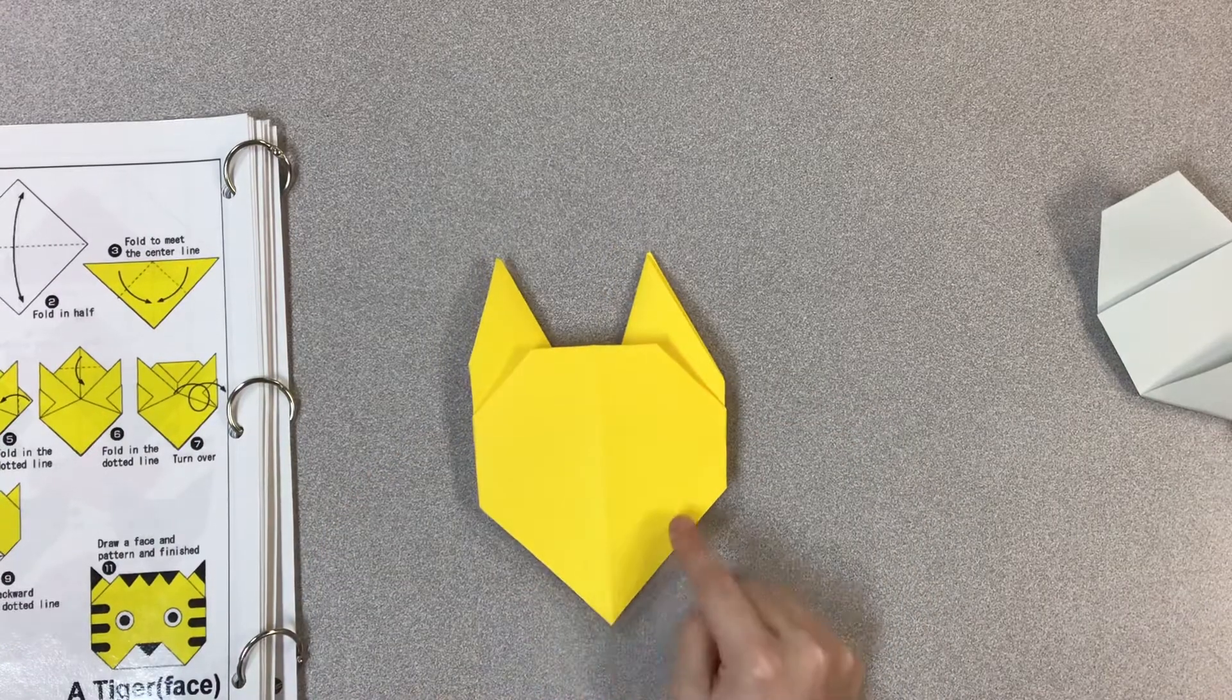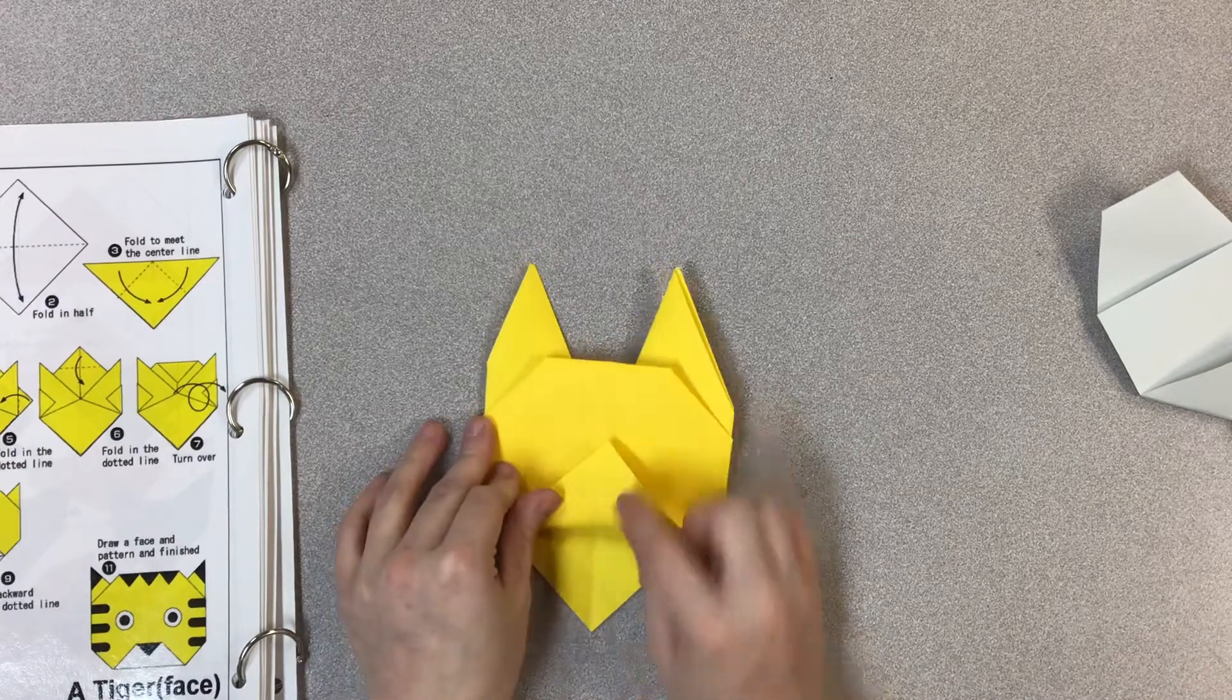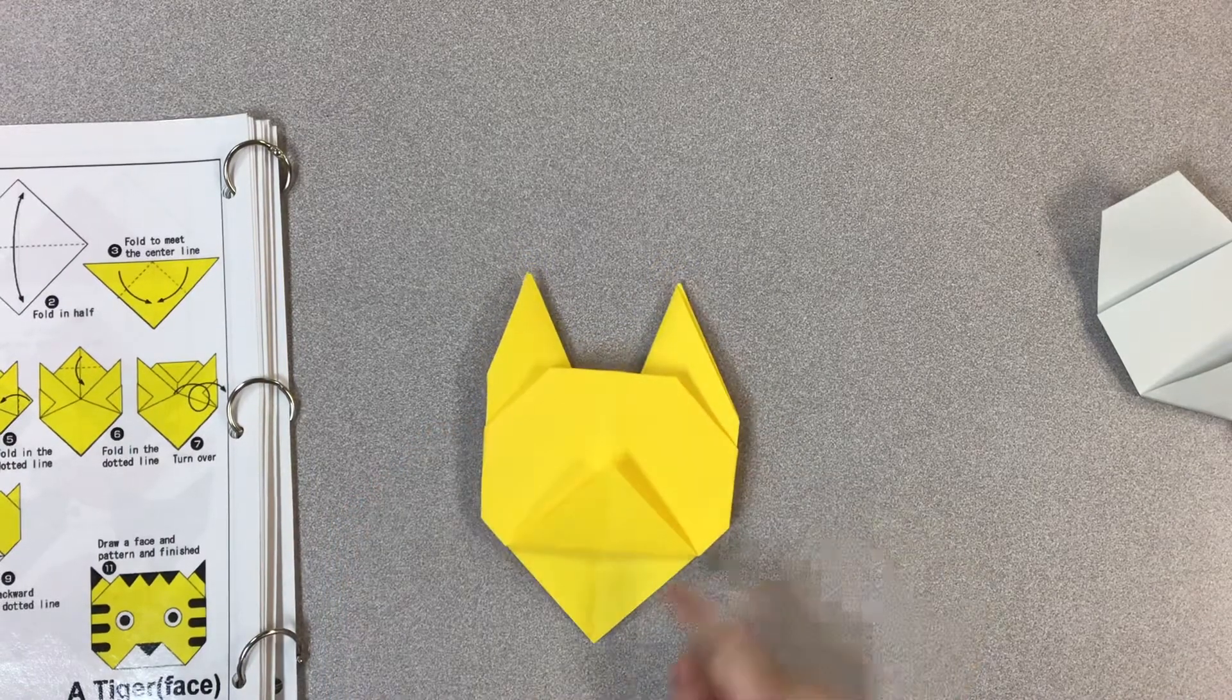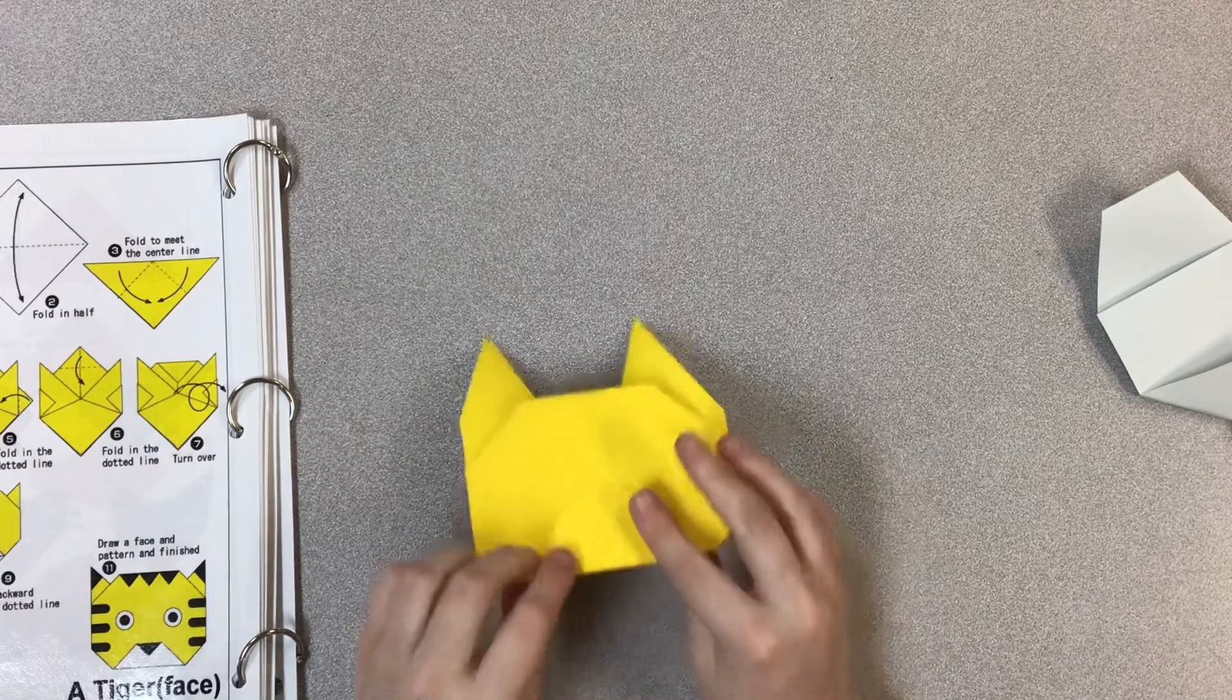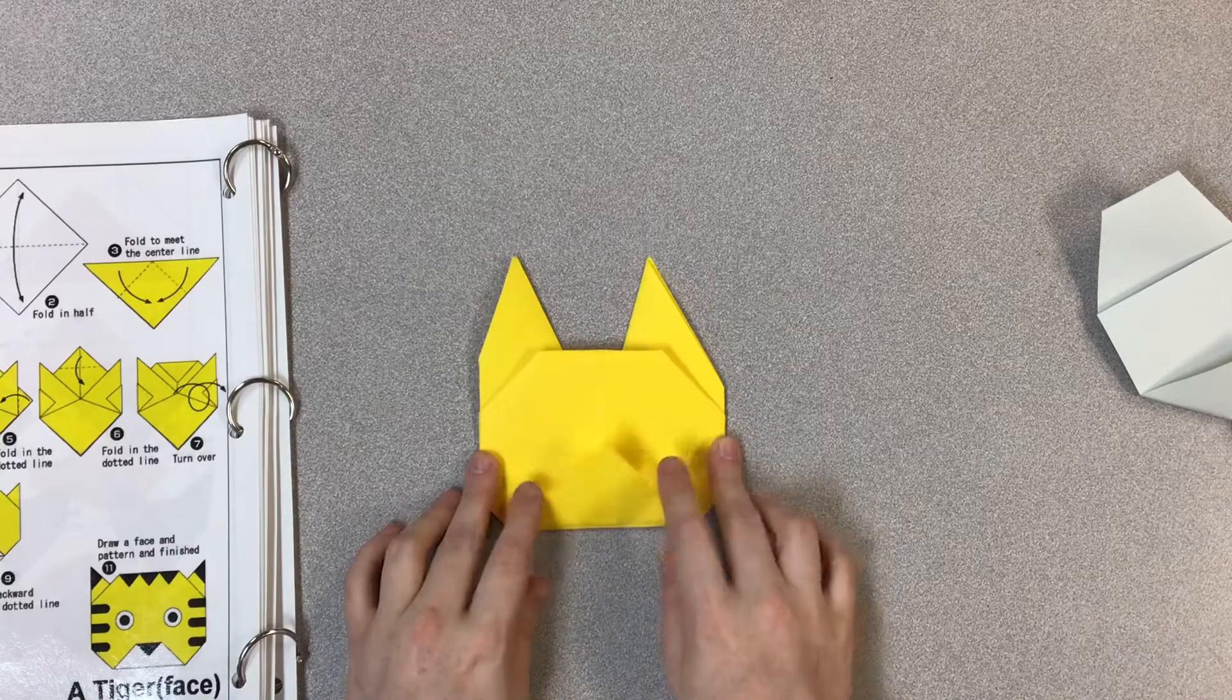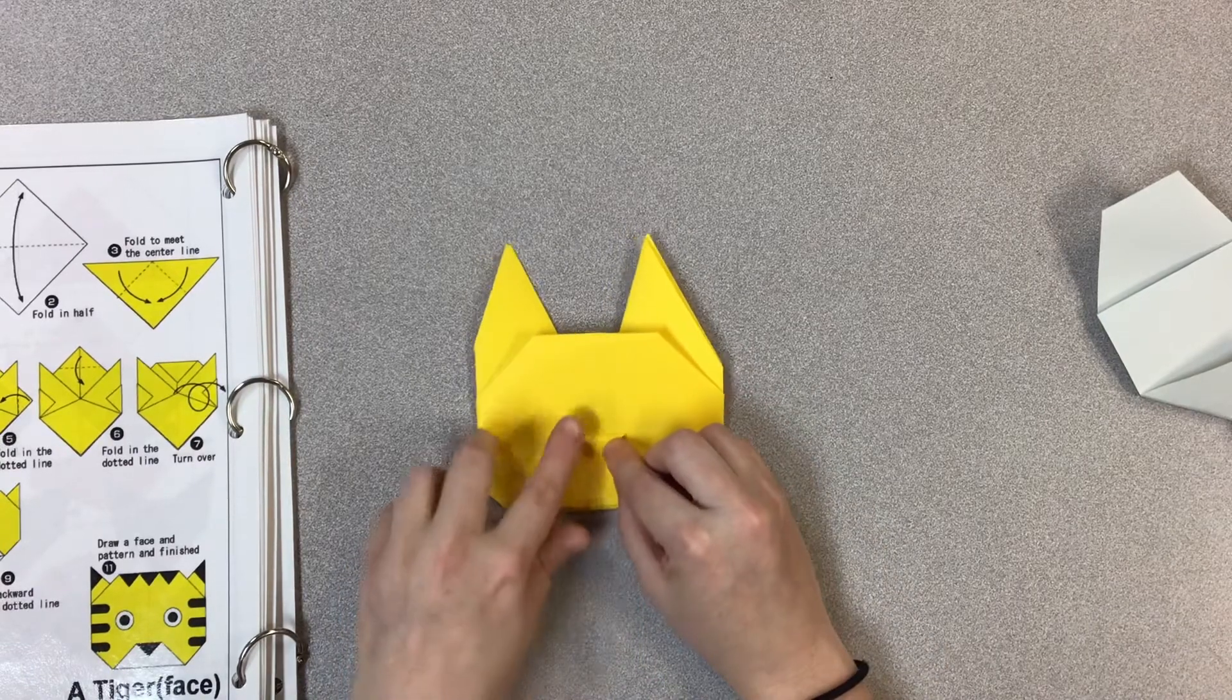Then we're going to fold this little point at the bottom. One side will get flipped up. And then the other triangle, it's going to get flipped backwards. Then this little point on the triangle flap, we're going to just flip that point down. And that's going to be like its little nose.